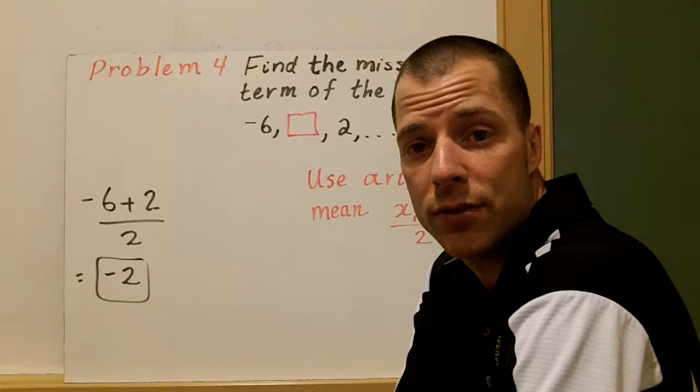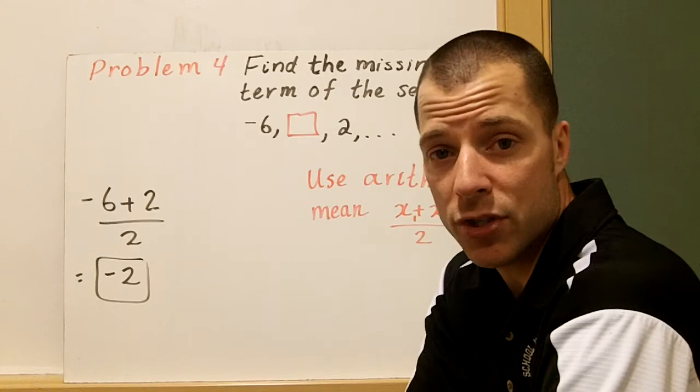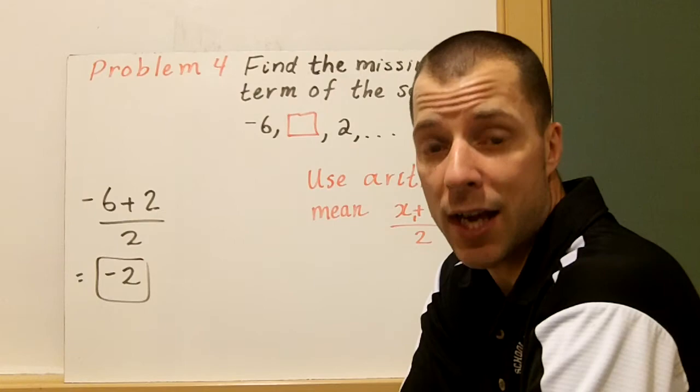Arithmetic sequences have a common difference that's all the same — you add a number to a term to get the next term. Next we're going to talk about geometric sequences, where instead of a common difference it's a common ratio, and you multiply rather than add to get to the next term. We'll see you for the next lecture on 9.3.